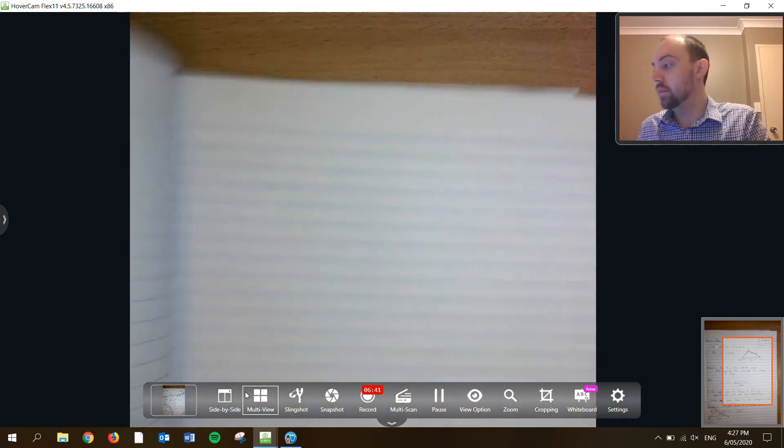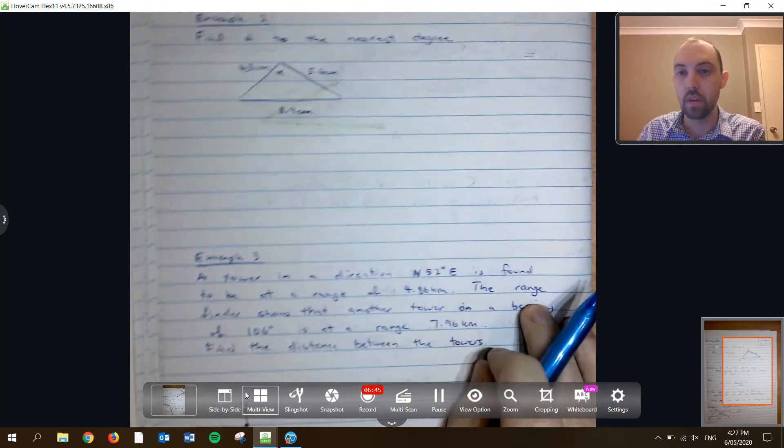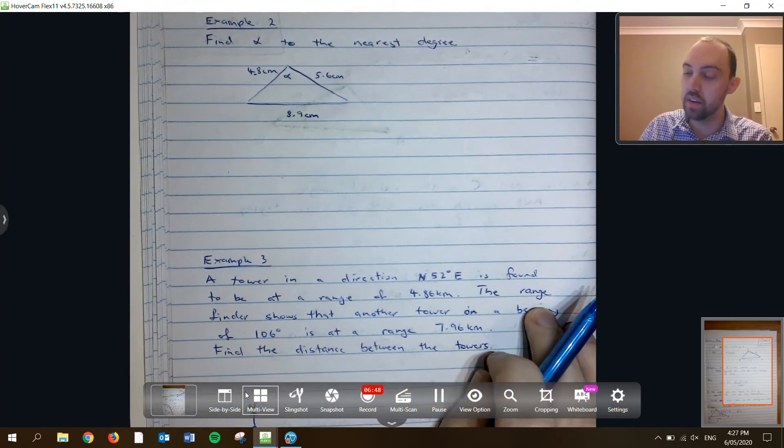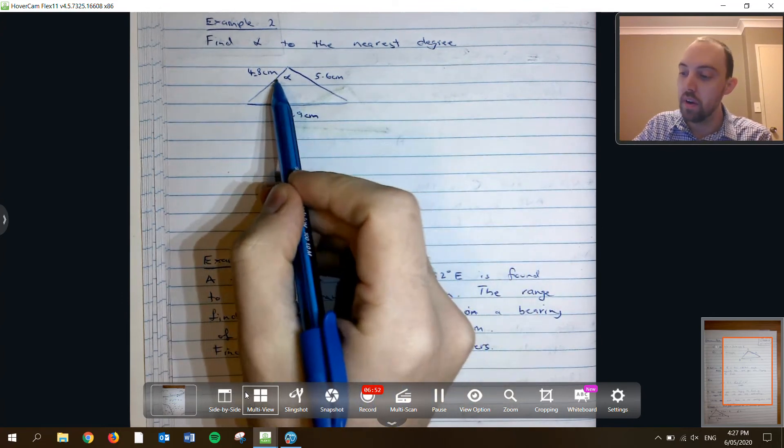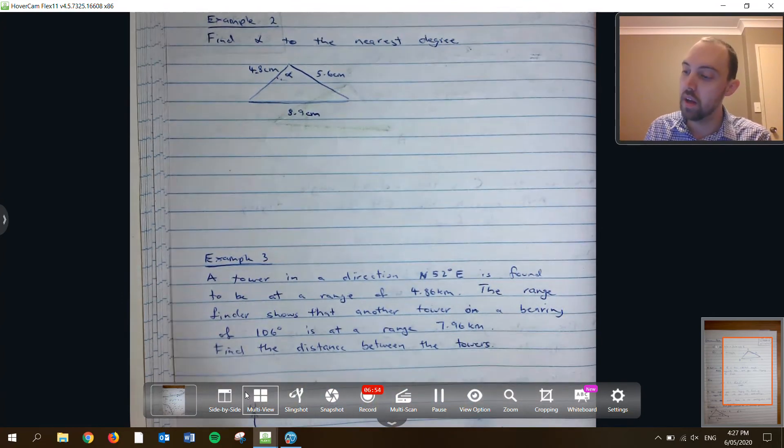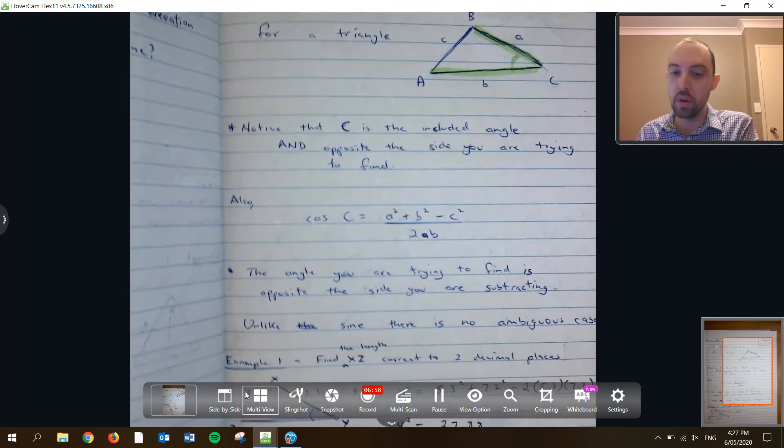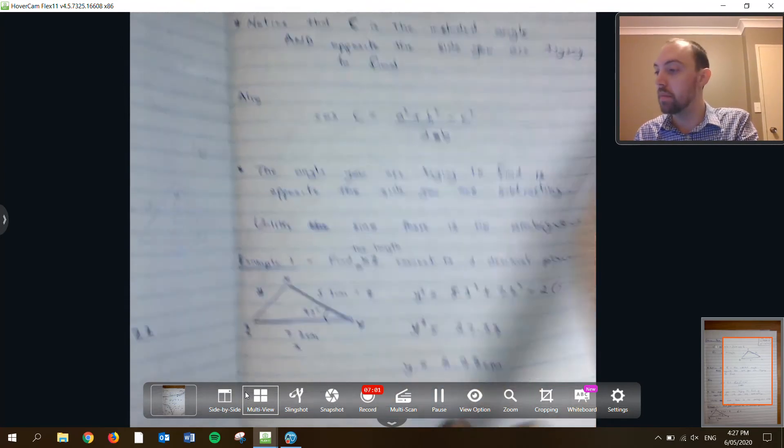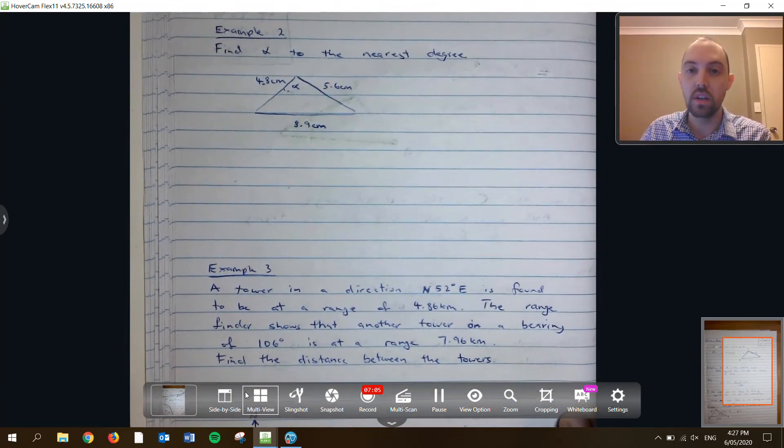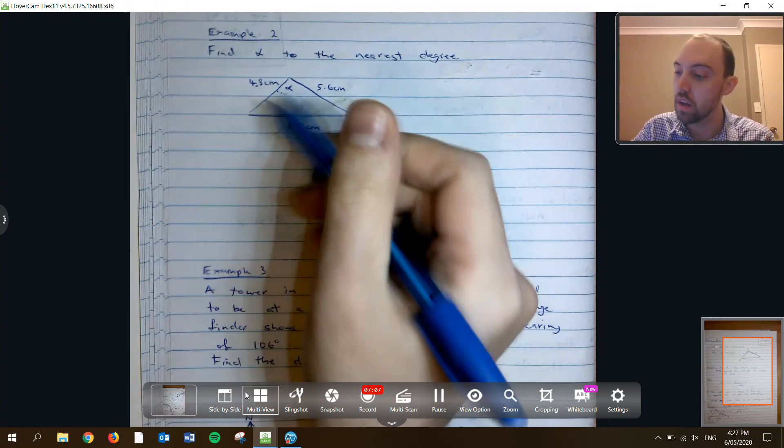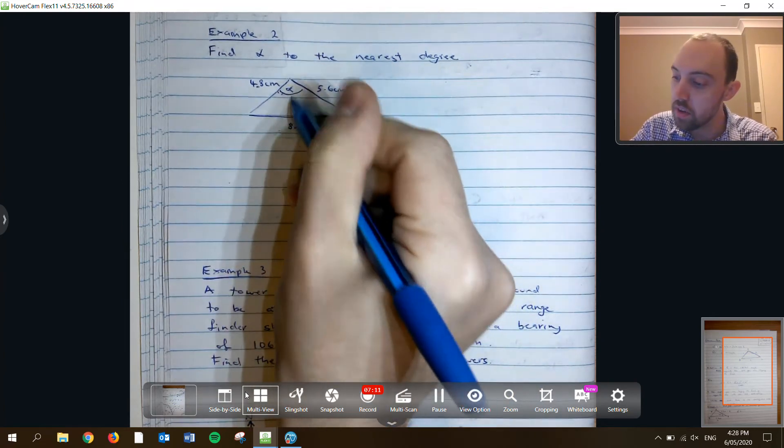Okay. Let's try another example. This one we're going to be finding an angle rather than a side. Okay. The angle that I'm trying to find is alpha. Did I read this correctly? Sorry. Find alpha to the nearest degree.